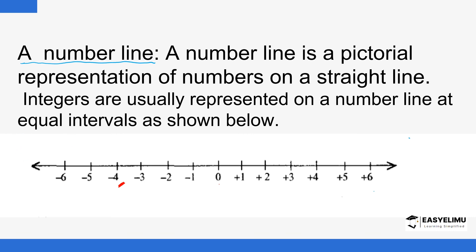It is important to note that the numbers to the right of zero can go up to the largest number you'll ever attain — one million, a billion — it can continue without end. That is why we have an arrow here. The arrow is very important: it signifies a continuation, implying that the process is endless. The same applies to the negative numbers on the left-hand side of zero.